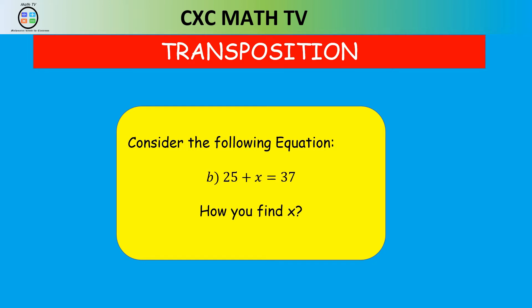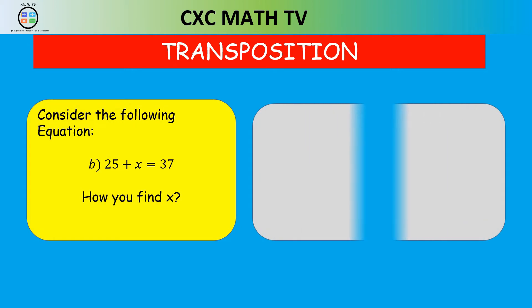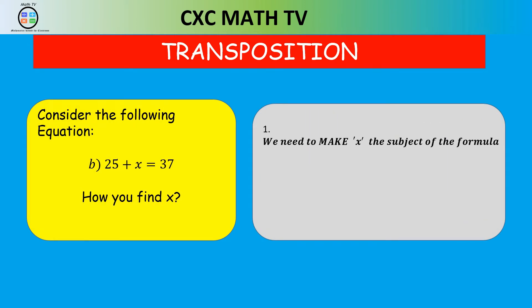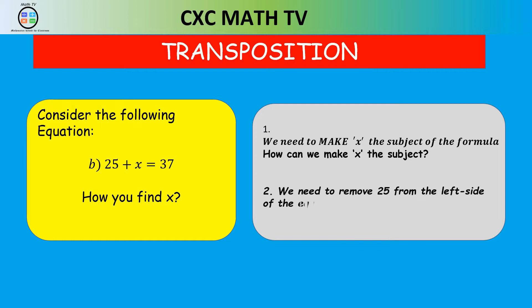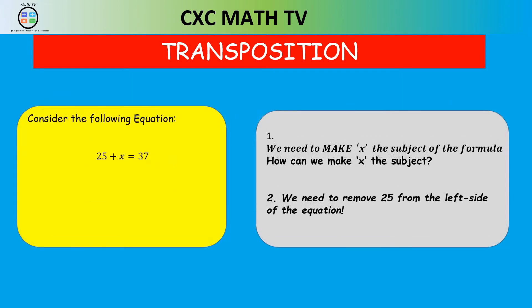We know X is equal to 12, but first we need to make X the subject of the formula. In order to make X the subject, we need to remove the 25 from the left side of the equation. We have to subtract 25 from the left side. If we subtract 25 from the left side, that gives us X equals 37. So when we also subtract 25 from the right side, that gives us X equals 12.